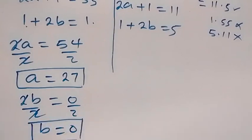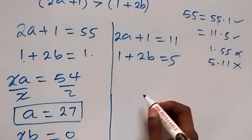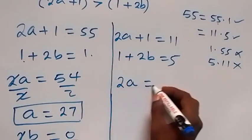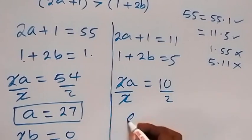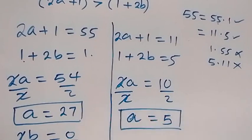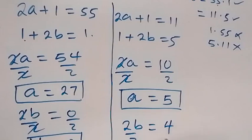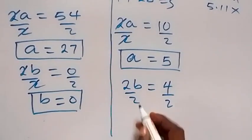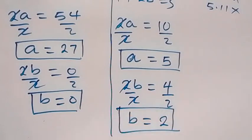Solving Case 2: taking 1 to the other side gives 2a equals 10, so dividing by 2 gives a equals 5. For b, we get 2b equals 5 minus 1 which is 4, and dividing by 2 gives b equals 2.